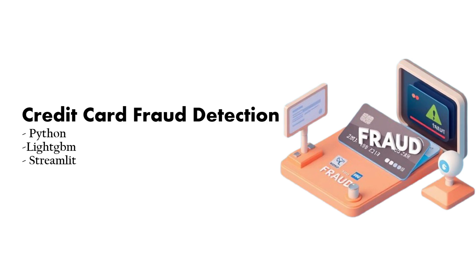LightGBM stands for Light Gradient Boosting Machine. It is a high-performance gradient boosting framework optimized for speed and efficiency. Unlike traditional decision trees, LightGBM uses leaf-wise growth, which means it builds the most significant splits first, making it much faster and memory efficient. We will be using LightGBM as the model for our project.